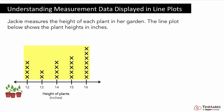How many plants have a height of 15 inches? To find out, we should look at the column with 15 inch plants. This 15 means 15 inches. To find how many plants are 15 inches tall, we need to count the X's: 1, 2, 3, 4, 5. There are 5 plants that are 15 inches tall.